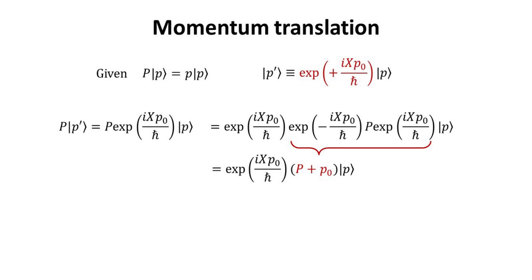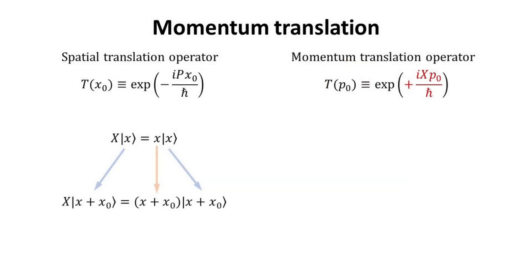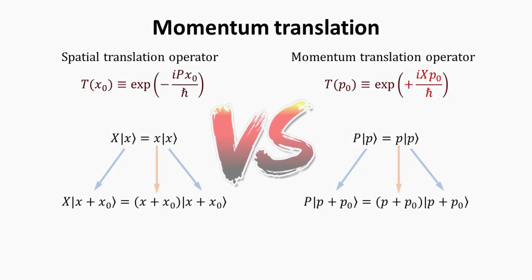The momentum operator acting on |p⟩ yields the eigenvalue p. Indeed, |p'⟩ is the eigenstate of the momentum operator with eigenvalue p plus p_0. The momentum translation operator is given with the position operator x as the generator of translation. Note also the plus sign in the exponent, contrary to the minus sign for the spatial translation counterpart. This momentum translation operator translates the momentum eigenstate from |p⟩ to |p + p_0⟩. We note the interesting relationship: the position operator generates momentum translation and vice versa, with opposite signs in the exponents.